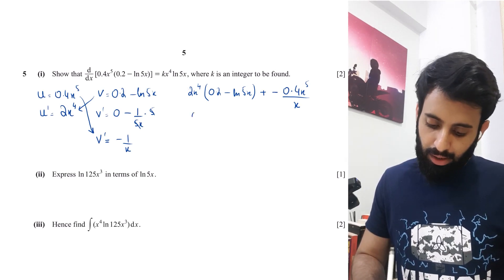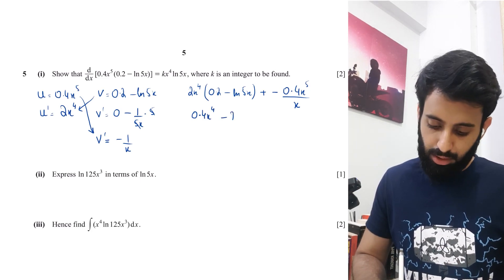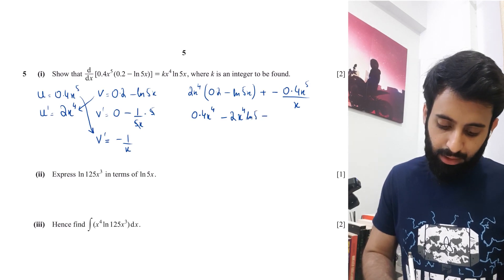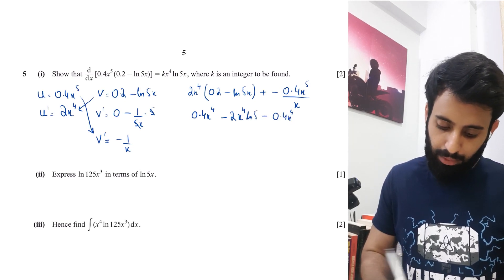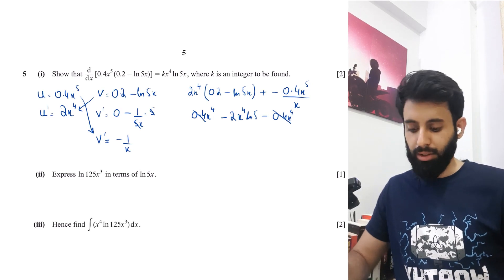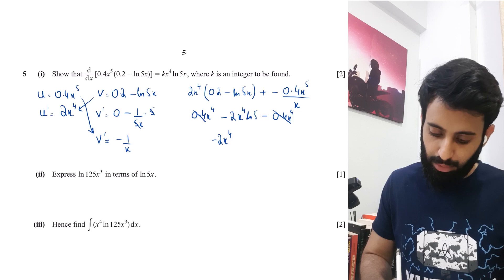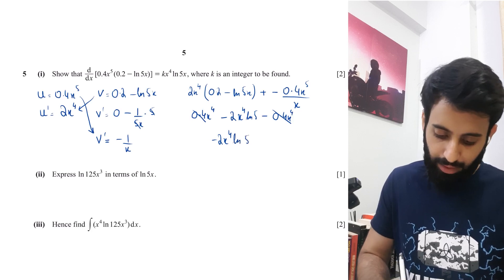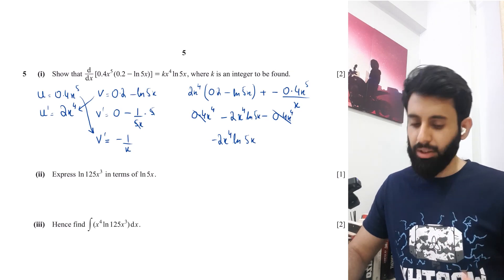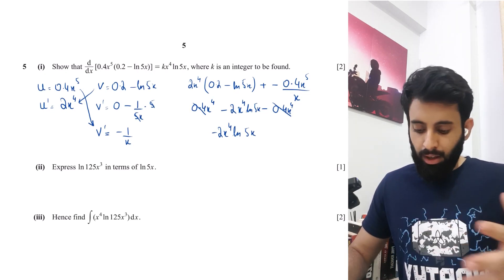Expanding: 0.2 times 2 = 0.4, giving 0.4x^4, minus 2x^4·ln5x, then minus 0.4x^4. The 0.4x^4 terms cancel out, leaving minus 2x^4·ln5x. So k = minus 2.